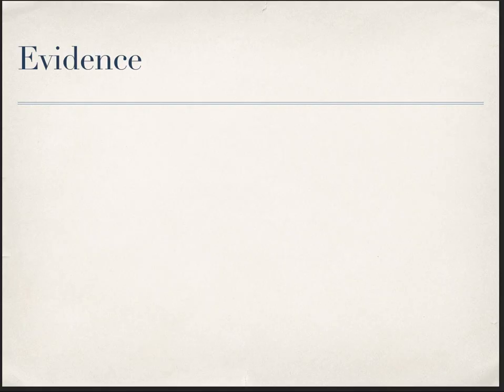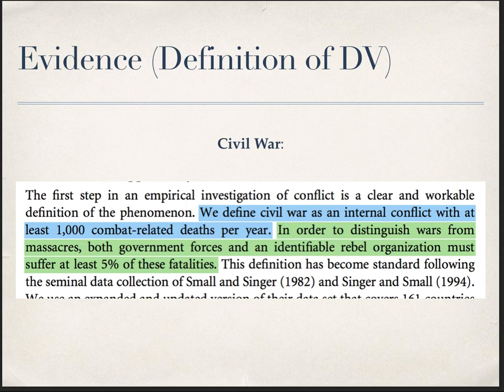We talked about construct validity in the first week of class, and now we're going to take that concept head on. Our dependent variable is civil war, measured by two elements both related to casualties: enough total deaths to distinguish the conflict from a riot, and enough casualties on both sides to distinguish it from a massacre. You don't want to count the government razing a particular neighborhood as civil conflict if the people didn't really fight back, so we need enough total casualties and some amount on both sides to demonstrate that there was actually fighting.